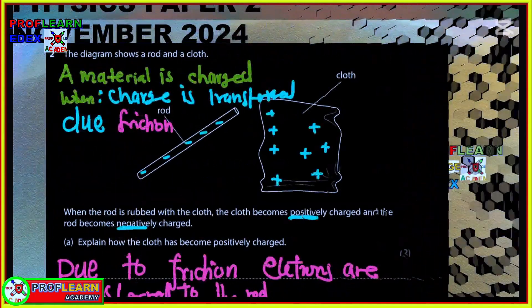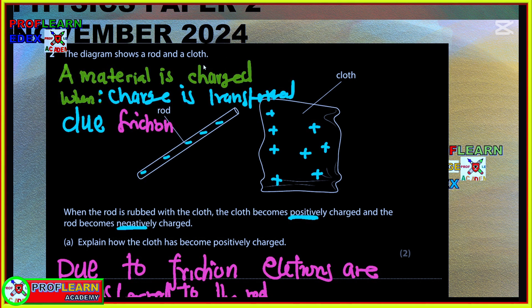After answering that question we move to electrostatic charge. You need to understand that materials are charged when charge is transferred due to friction. If this rod is wrapped against the cloth due to friction, electrons will be transferred to the rod and the rod will become negatively charged because it has more electrons. Then the cloth is going to remain positively charged.